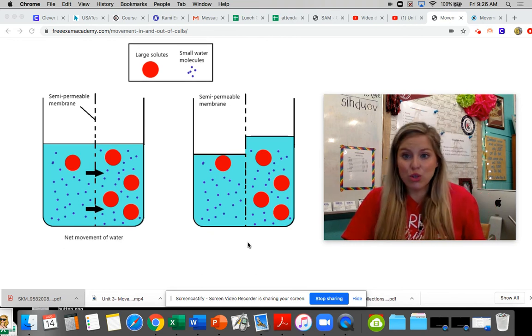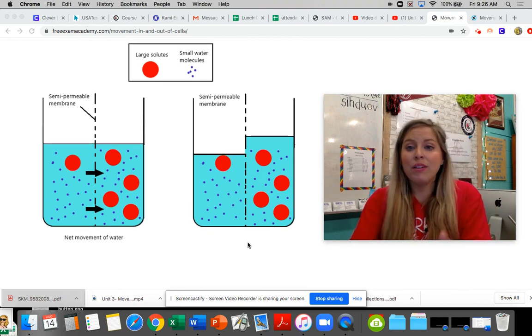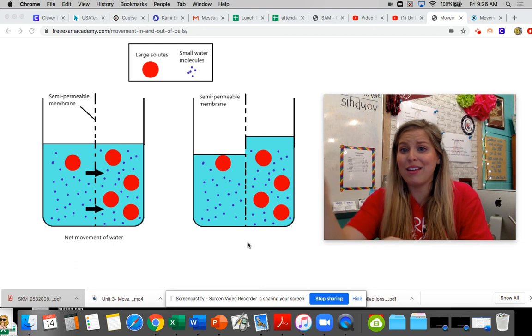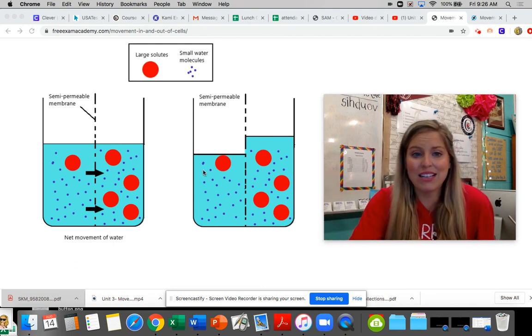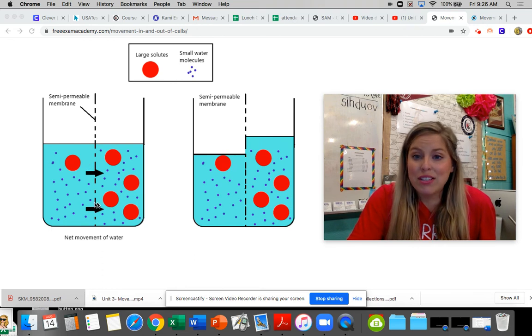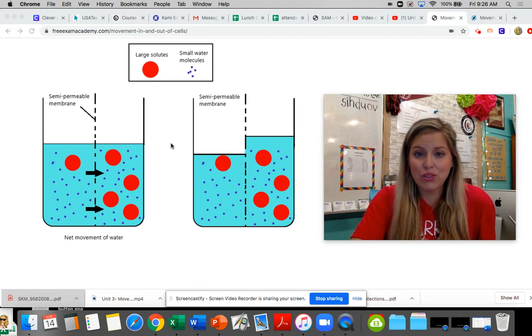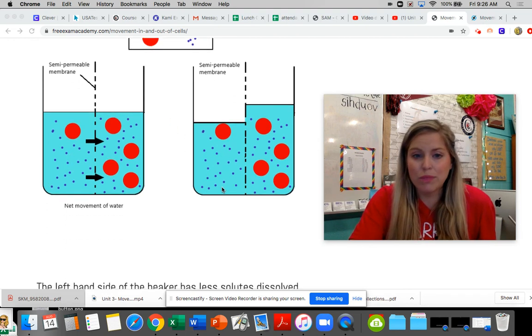So make sure with diffusion, we follow the molecules, the particles, the other circles that we're dealing with outside or inside of the cell. For osmosis, we follow the water. Make sure our water is moving from a high water potential to a low water potential.